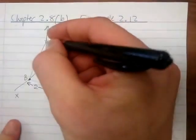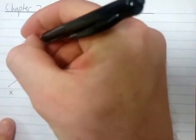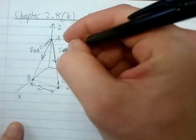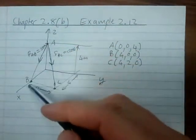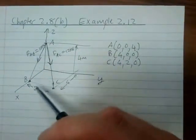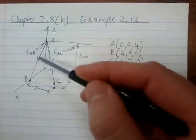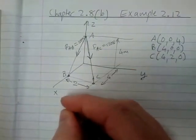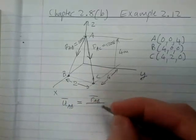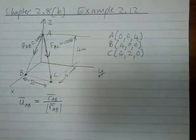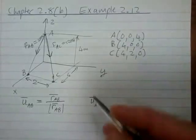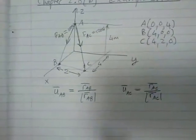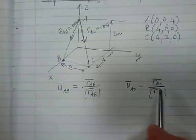We're trying to convert these two forces FAB equals 100 N and FAC equals 120 N into Cartesian vector notation so we can add them up and get a resultant. We need the unit vectors along these two directions. The unit vector from A to B equals the position vector AB divided by the magnitude of that position vector. Similarly, the unit vector from A to C equals the position vector AC over the magnitude of AC. So the first step is to calculate position vectors RAB and RAC.